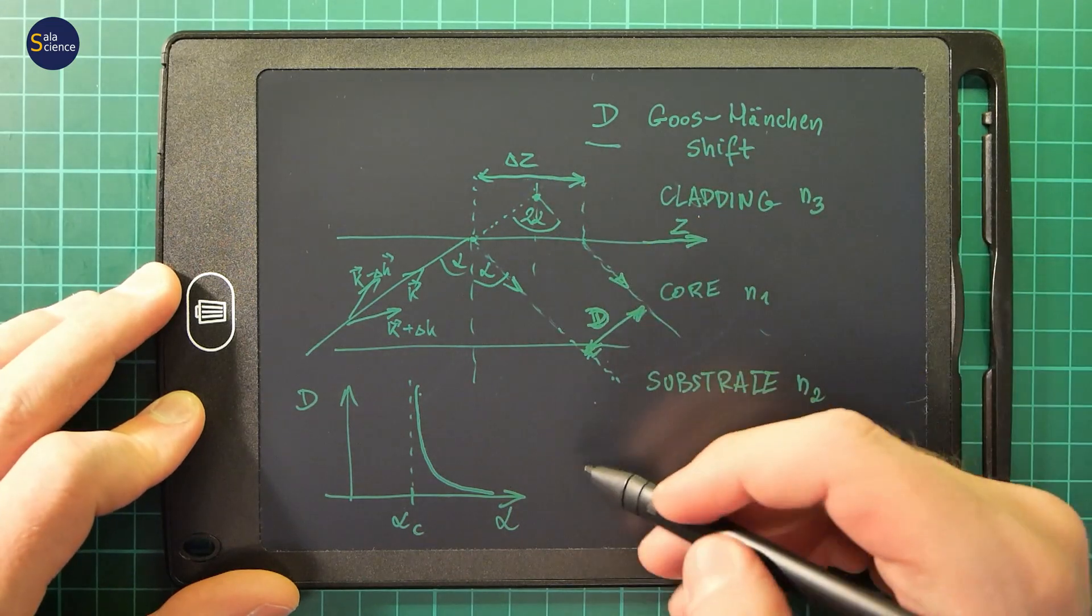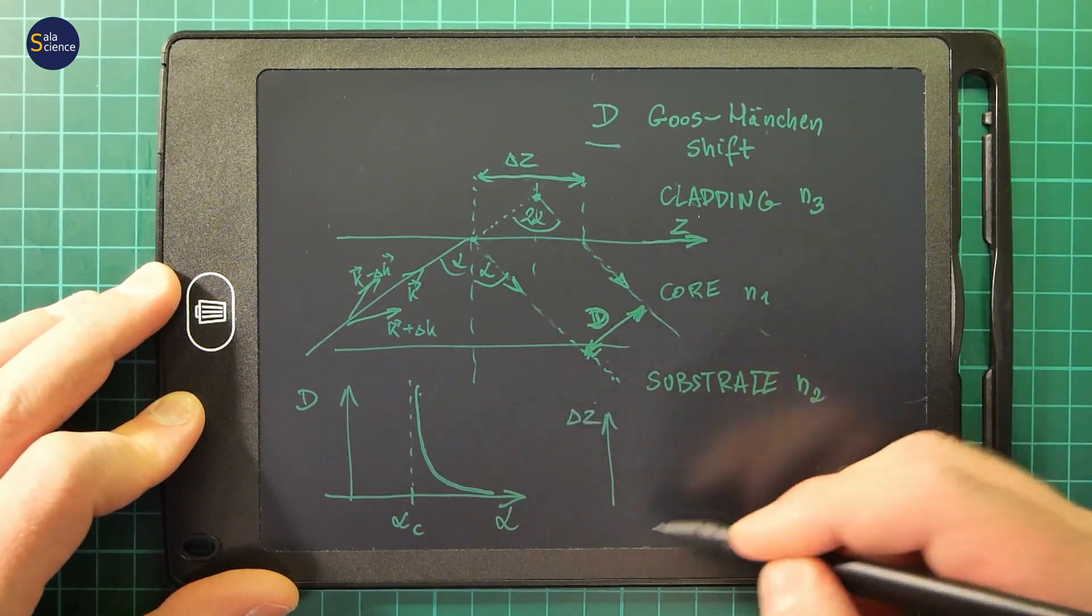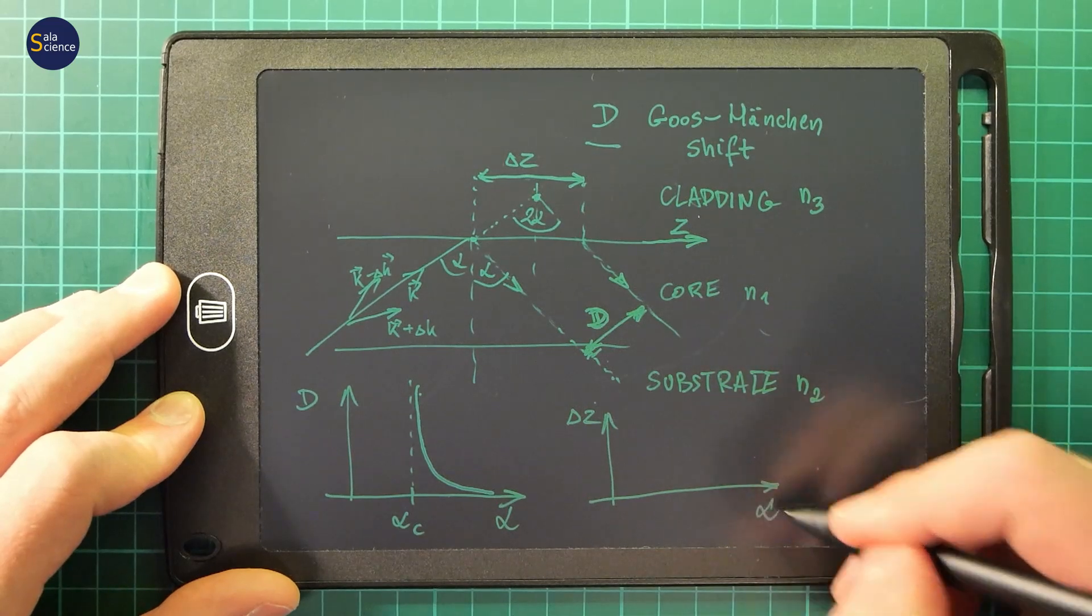If we draw this delta z on the other hand, and here is alpha, then it will look like this.